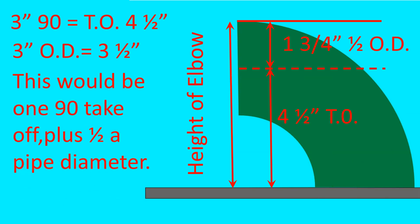This would be 1 90 takeoff plus half the pipe diameter, giving you a dimension of six and a quarter. So we need something roughly about three and an eighth.